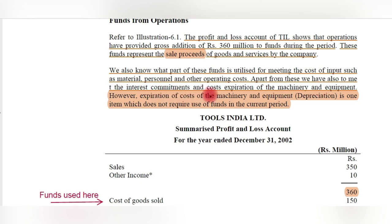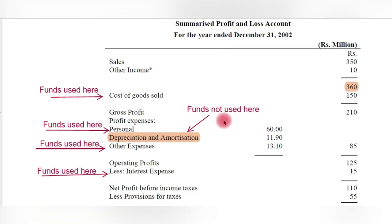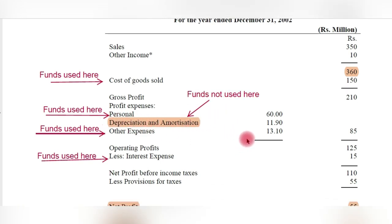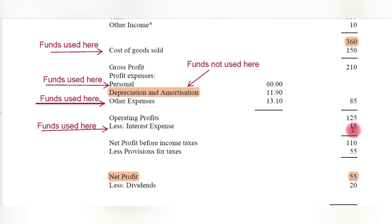So 150 million rupees of cash is utilized for generating 360 million rupees in revenue. Apart from input costs, we also have interest commitments, depreciation of machinery and equipment, and tax payments. Personal expenses are 60 million rupees, depreciation and amortization is 11.9 million rupees, and other expenses are 13.1 million rupees. All of these involve cash outflows except depreciation — for depreciation, cash is not actually utilized.